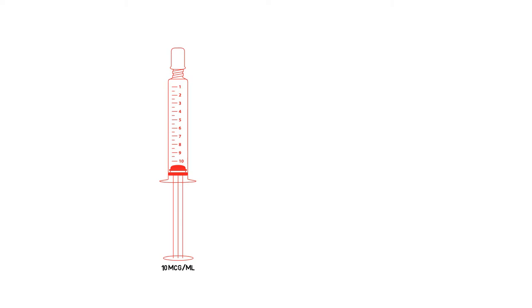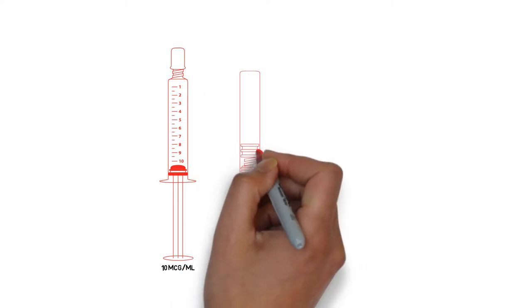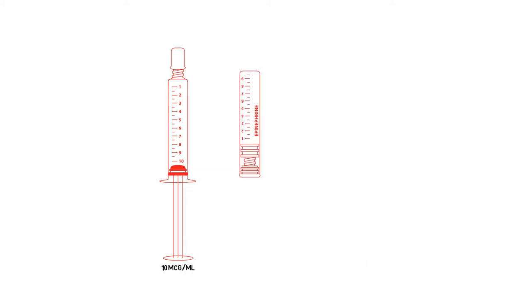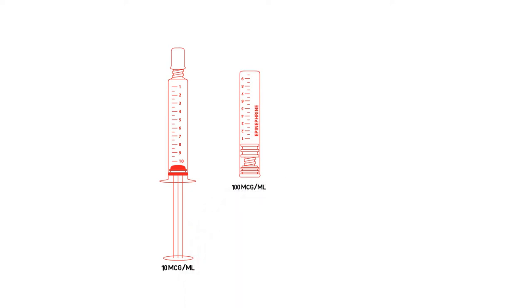Start the epi drip. If not, you need higher doses of push dose epi, 40 micrograms, 80 micrograms. From that point, just use the code cart epi, which has 100 mics of epi per ml, administer that in 1-2 ml at a time, every 5 minutes.